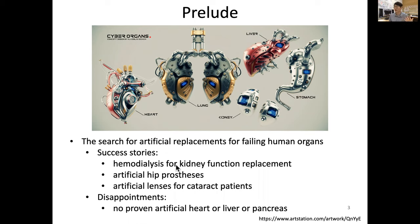For example, hemodialysis for replacing kidney function. But the hemodialysis machine is actually big equipment, and the patient has to go to the clinic a couple of times a week to filter the blood, replacing kidney function. So we still do not have a true artificial kidney.